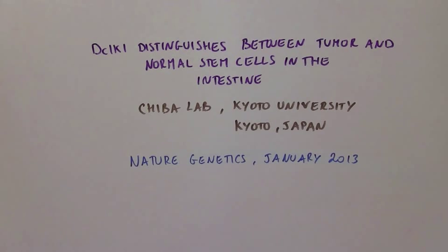This research article is titled DCLK1 distinguishes between tumor and normal stem cells in the intestine. It was published by the Chiba Lab at Kyoto University in Kyoto, Japan in Nature Genetics in January 2013.